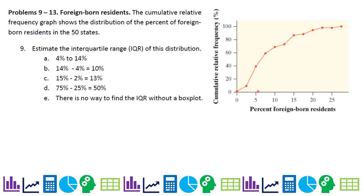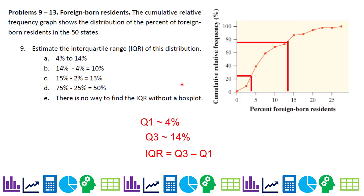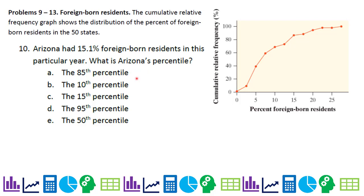Problems 9 through 13 use a cumulative relative frequency graph showing the distribution of percent foreign-born residents in 50 states. To estimate the IQR: Q1 at the 25th percentile is about 4%, and Q3 at the 75th percentile is about 14%. Subtracting gives an IQR of 10%, which is answer B. For problem 10, Arizona had 15.1% foreign-born residents. Going up from 15.1% and reading left on the graph gives approximately the 85th percentile.